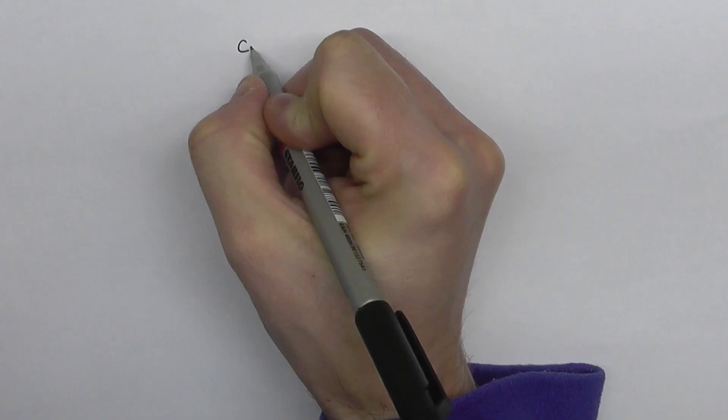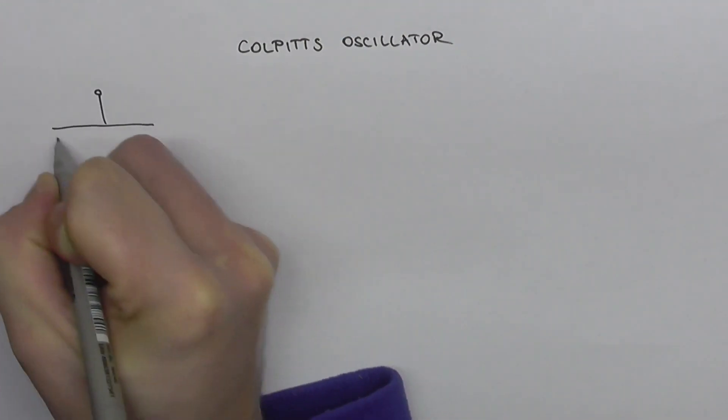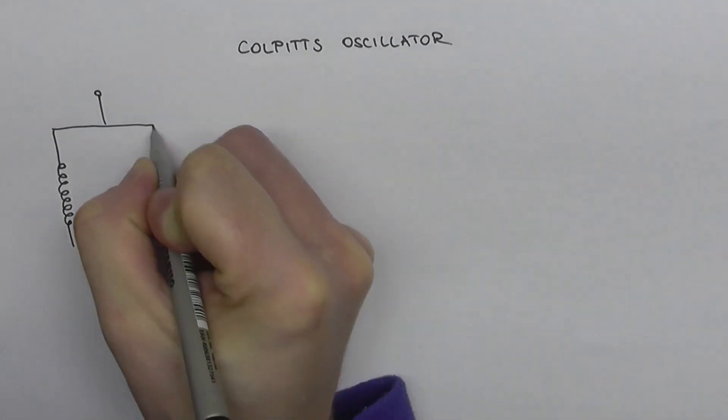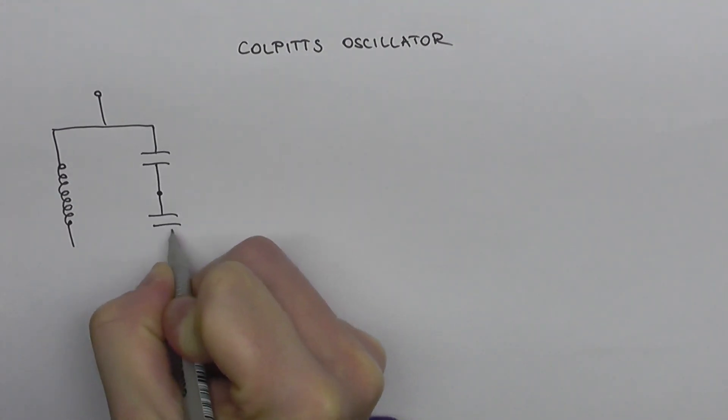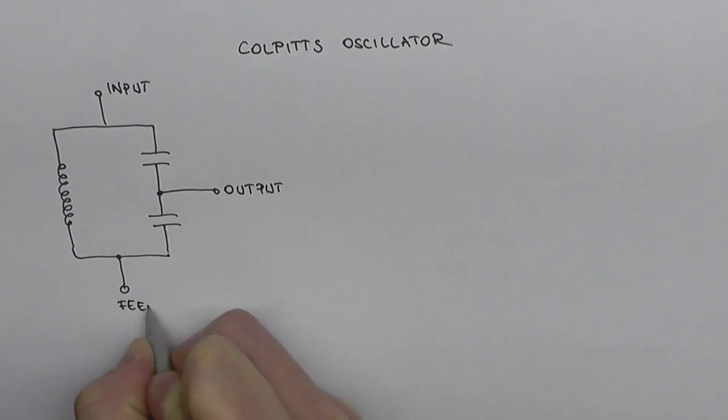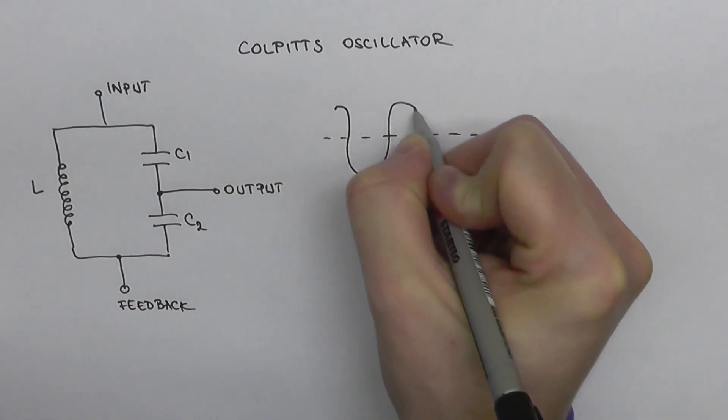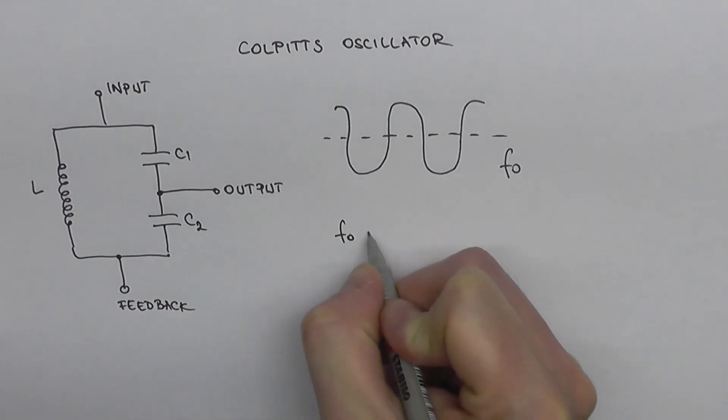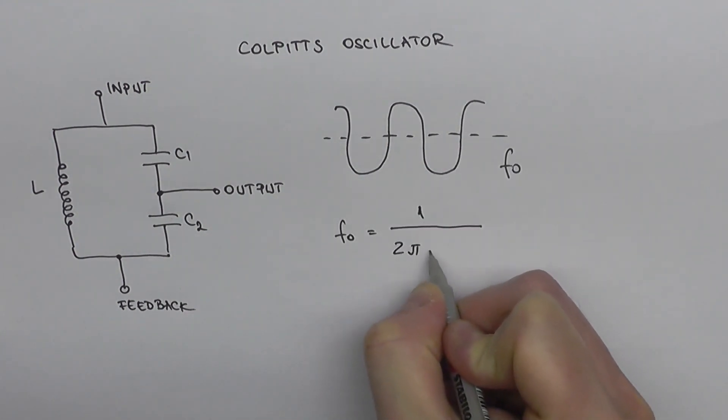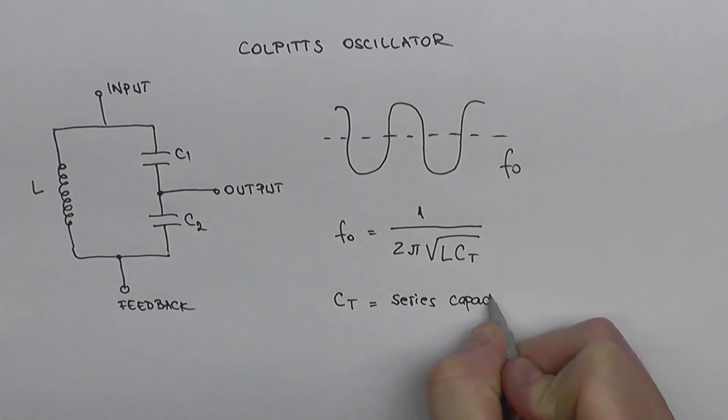I'm going to give you an example here. Let's say I want to build a Colpitts oscillator here, and I'm going to draw a small schematic here. This intro is longer than I intended, but I just wanted to make sure that even those who are beginners in electronics will understand what I'm talking about here. So anyway, this is our Colpitts oscillator. And basically, this circuit outputs a signal with a specific frequency. So the frequency of the output signal, we're going to calculate this with this formula, where CT equals - is basically the series capacitance of these two capacitors here, C1 and C2.